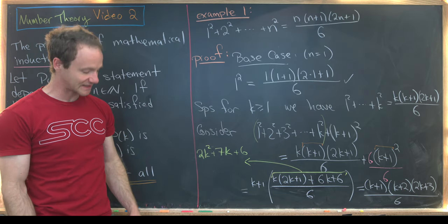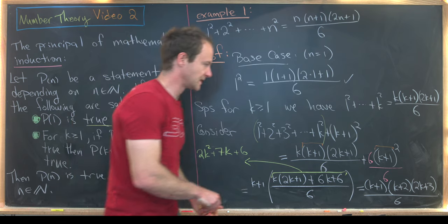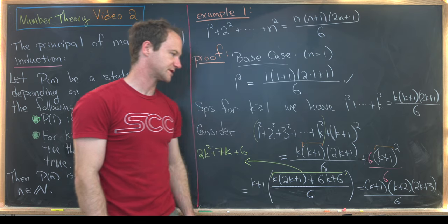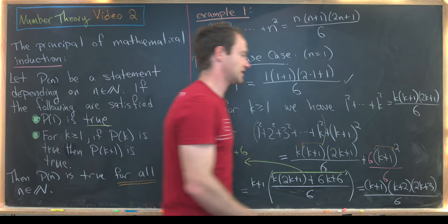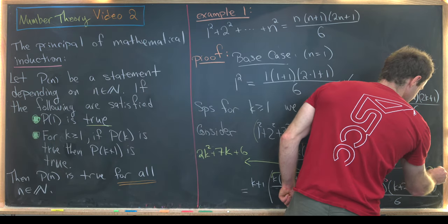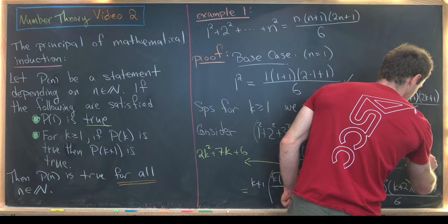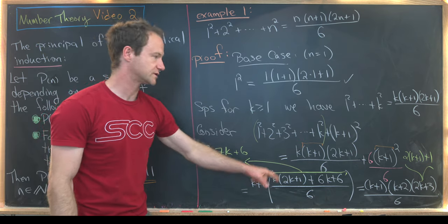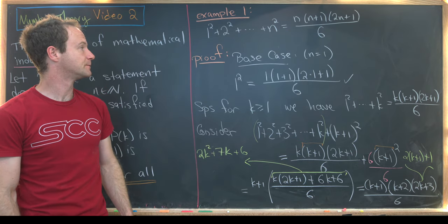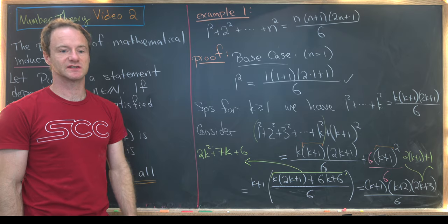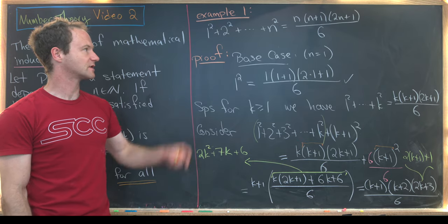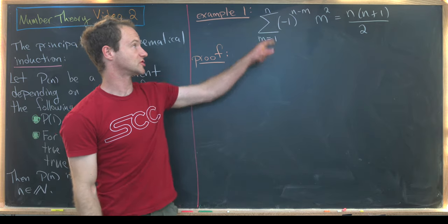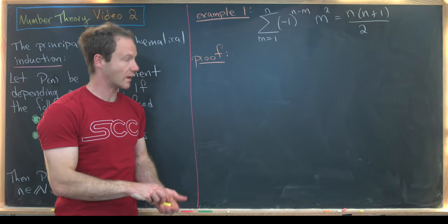This completes our argument. Notice that k plus 2 is the same as (k plus 1) plus 1, and 2k plus 3 is the same as 2 times (k plus 1) plus 1. So the formula holds with k plus 1 plugged in, finishing this proof by induction. Now let's look at another example: the alternating sum of the first n squares.